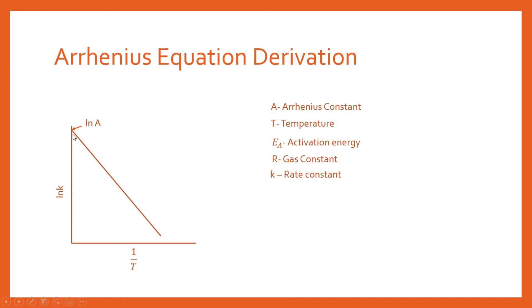So he defined ln of A, where A is the Arrhenius factor, to be the intercept of this graph.